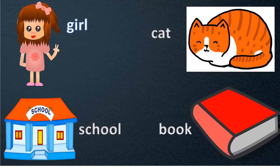Children, in this picture you can see a girl, a school, a cat and a book. So girl, school, cat and book are general names of a person, place, animal and thing. It means girl can be any girl, cat can be any cat, book can be any book and school can be any school. So these four names are general names of persons, places, animals and things.